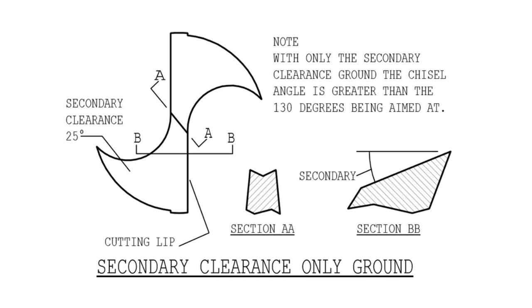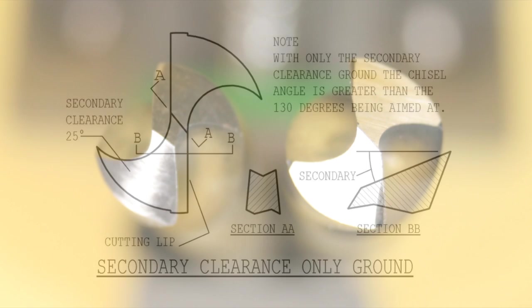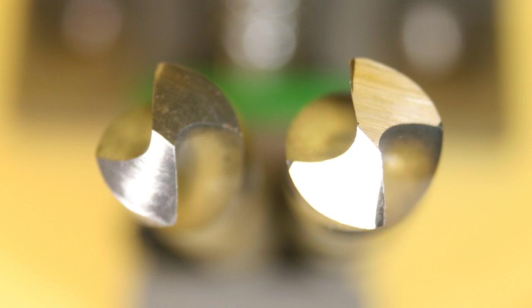Another result of grinding the secondary clearance first is that the chisel angle is also greater than the normal 130 degrees. This can be seen on the slide compared to the conventionally sharpened drill on the left.